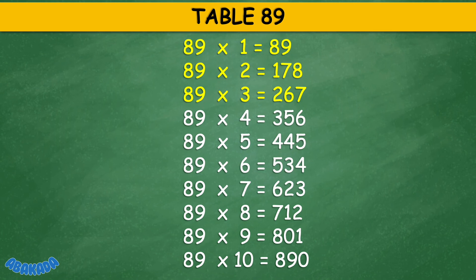Table 89: 89 times 1 equals 89, 89 times 2 equals 178, 89 times 3 equals 267, 89 times 4 equals 356, 89 times 5 equals 445, 89 times 6 equals 534, 89 times 7 equals 623, 89 times 8 equals 712, 89 times 9 equals 801, 89 times 10 equals 890.